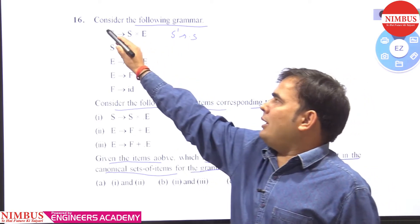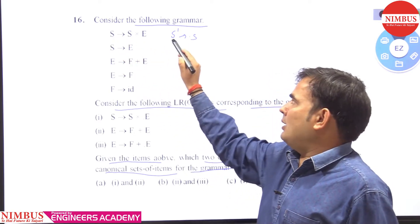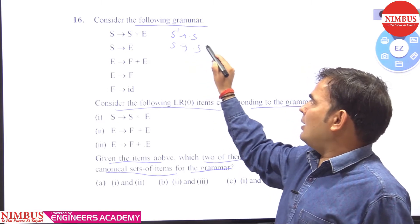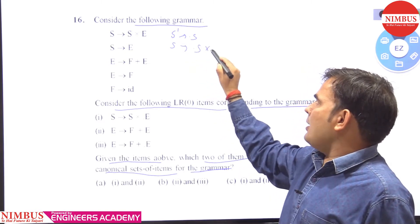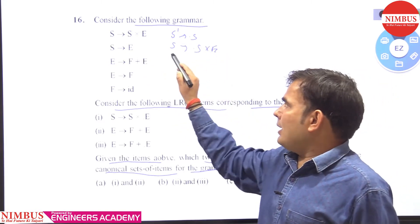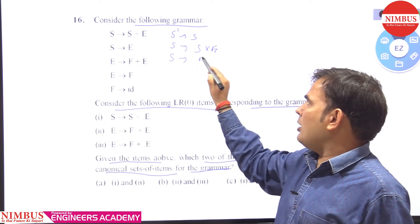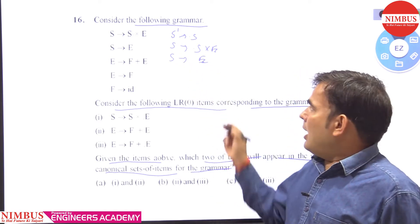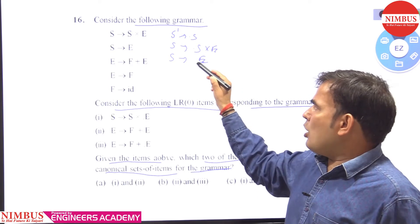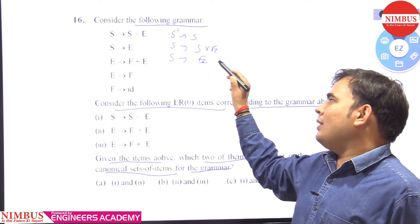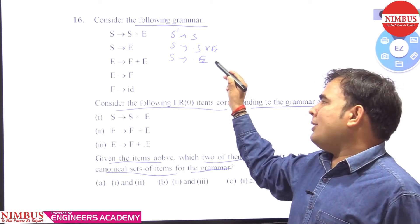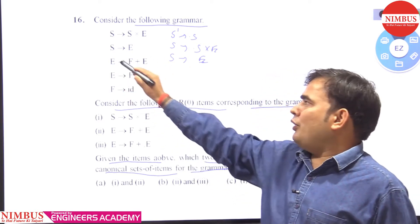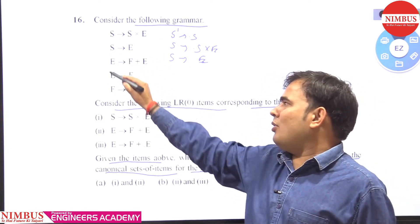So we will take all the productions starting from S from the grammar. There are two productions starting from S: S → .S×E, and S → .E.